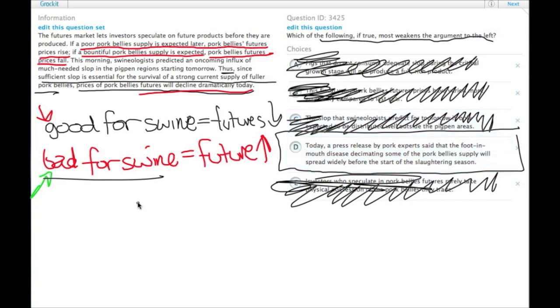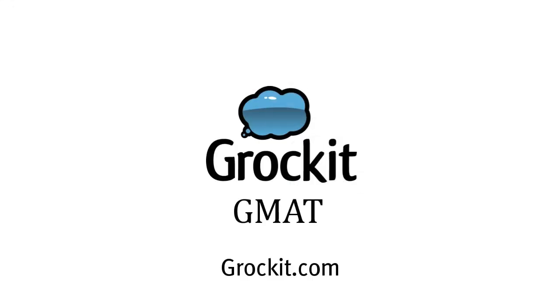So choice D is the only one that reverses the trend of something good happening to swine. See you next time.